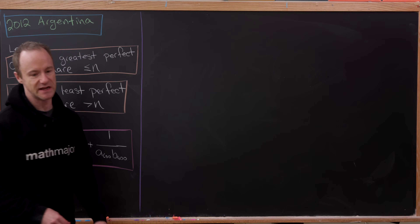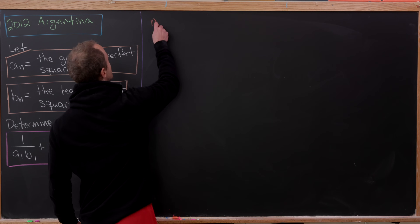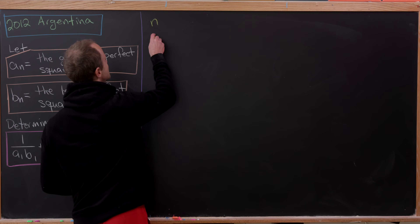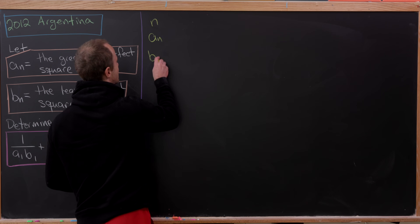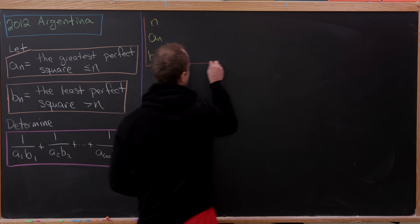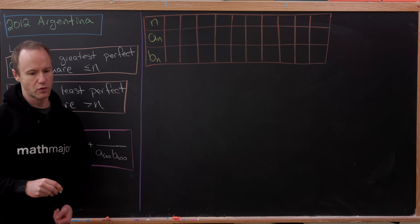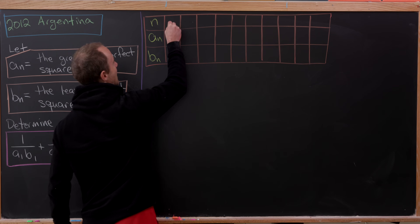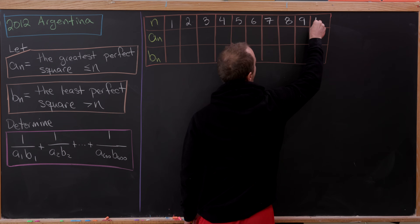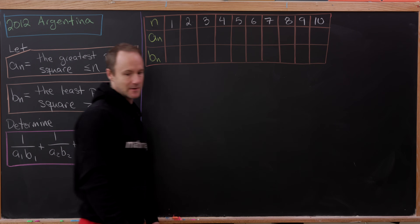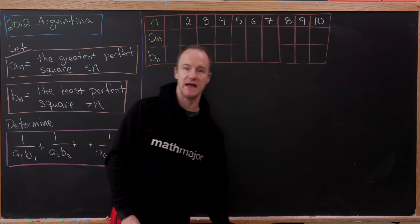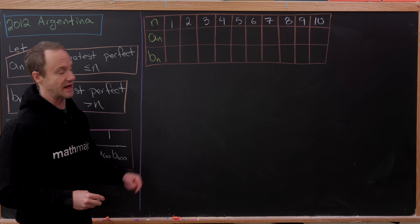The way we'll get started is with a chart of values of a_n and b_n, just to get some idea of what's going on here. So let's start making this chart with n equals 1, 2, 3, 4, all the way up to 10.